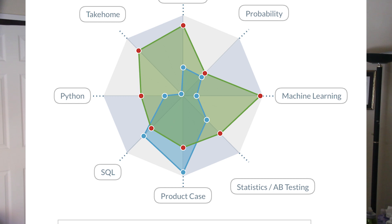At Interview Query, we decided to tackle this problem and formulate our own methods for predicting what would be asked on the data science interview without relying on anecdotes and other people's help. This is what we came up with — the radar chart — which lets you view exactly what topics are most commonly asked for different positions at different companies.